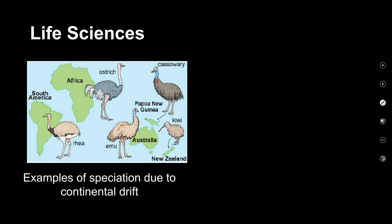Another example: large flightless birds found on different continents. They are separated by vast areas of ocean and water bodies. Although they look similar, they are different species because they were separated by a physical barrier, underwent natural selection separately, and have evolved into new species.